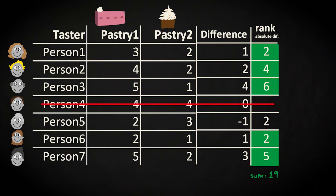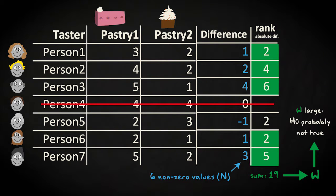Then, you take the sum of those ranks where the difference was positive. And also note the number of values with non-zero differences, 6 in this case. The value that you have calculated is the Wilcoxon rank sum statistic, often abbreviated to W. The bigger the value of this statistic, the less likely that there is truly no difference between the average scores.